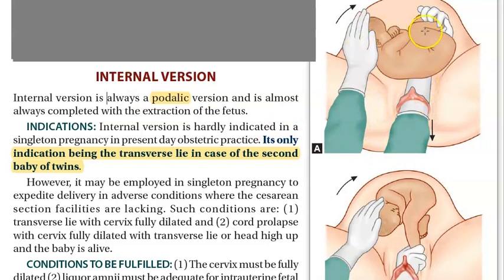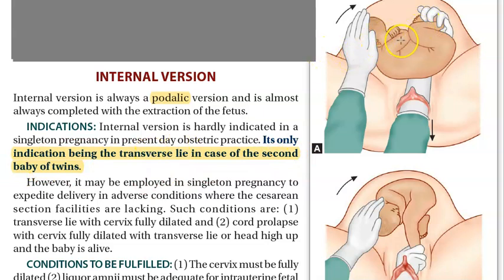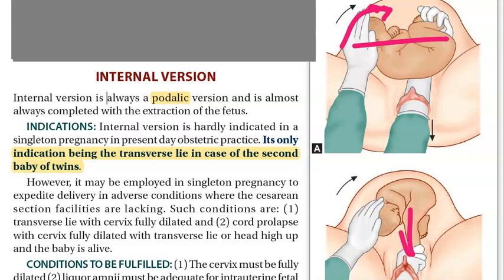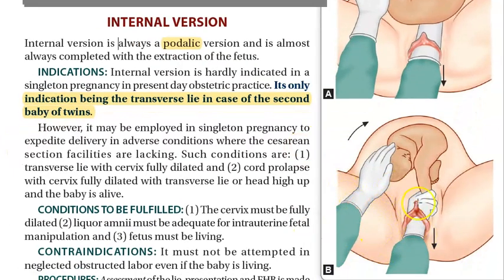Here we are looking at internal version — you're putting the hand inside. You can see one hand is outside and one hand is inside, and you're turning the baby. This is a podalic version, meaning you are trying to make the leg come out first. This is usually done in the case of twins for the second baby if it is lying transversely. The hand is put in and the second baby, which is in a transverse lie, is turned internally by pulling the leg out. This is called internal podalic version. It can be applied in non-twins also, but mostly in twins.